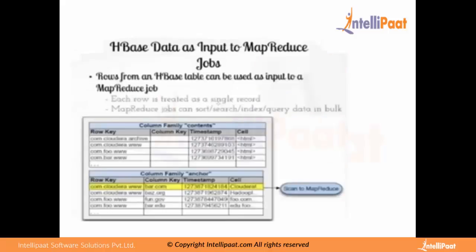Let's look at how to access HBase from MapReduce. Rows from an HBase table can be used as input to a MapReduce job. Each row is treated as a single record, and MapReduce jobs can search, sort, index, and query the data in bulk.